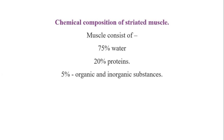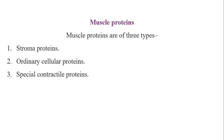The 20% proteins present in muscle fall into three categories. The first type is stroma proteins.